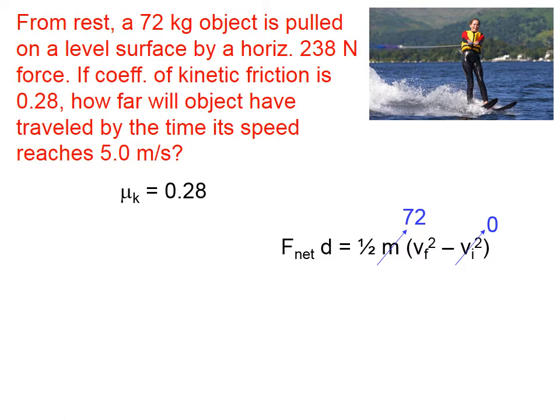How far will the object have traveled? That's this variable right here, d. So that's the one we're looking for. How far will the object have traveled by the time its speed reaches 5.0 meters per second? So 5.0 is the final speed, and we're going to have to square that, 5 squared. It looks like this is simply a matter of finding the net force, and once we find that, all the other variables except the distance are known, and we should be able to calculate that distance.